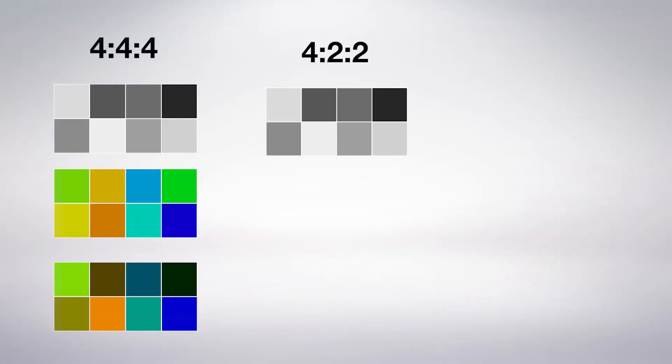So 4:2:2 says that while every pixel gets its own brightness, two of the pixels in the top row share color information like this, and two pixels in the bottom row share color information like this. This reduces the file size and processing requirements drastically.